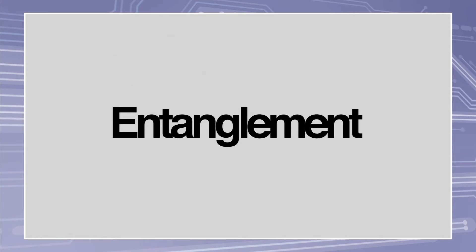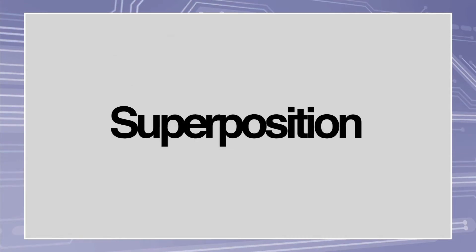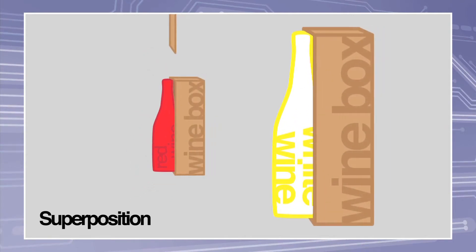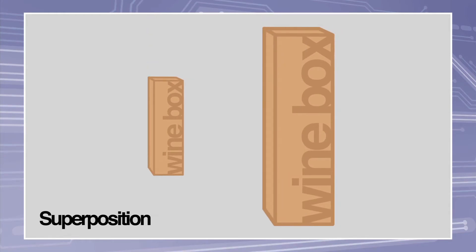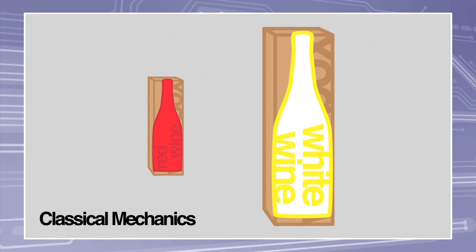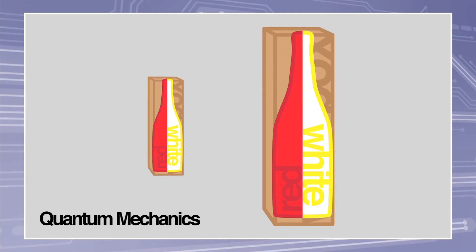In order to understand entanglement, one first needs to appreciate a quantum mechanical property called superposition. Suppose you have a friend who has one bottle of red wine and one of white, and who has given one of them to you as a gift in a box. Following classical mechanics, the wine you receive must either be red or white. However, quantum mechanics allows the box to contain a bottle of red wine and white wine simultaneously in what is called a superposition state.